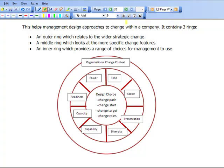It contains three rings. First of all, an outer ring. The outer ring relates to the wider strategic choices. In other words, we're looking at the organizational change context. In what context is change happening?